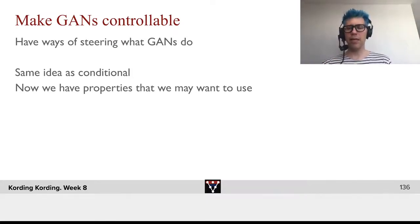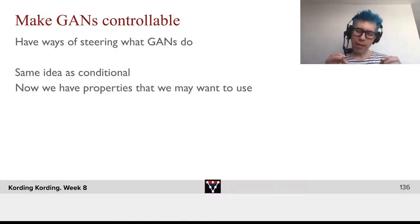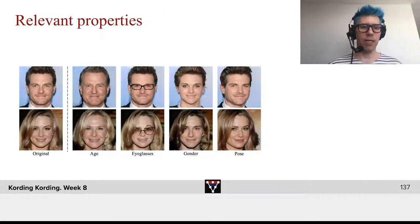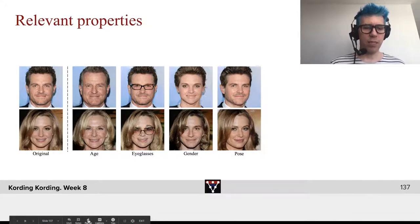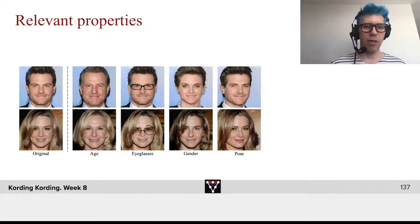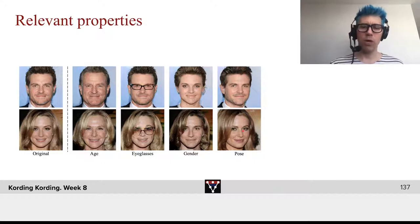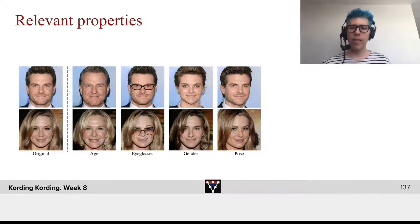So that's something that at least with conditional GANs is hard to achieve. We now want to have specific properties that we can specifically manipulate. If these are the original images that we have on the left-hand side, we might want to be able to change age — make them older — add eyeglasses, swap their gender, change the pose. Things like that. We want things that we can meaningfully manipulate.